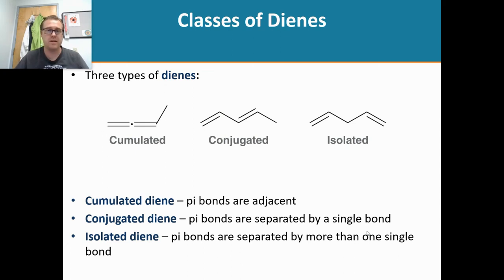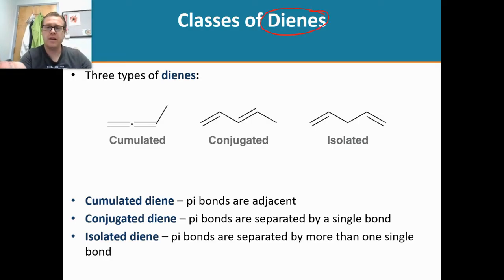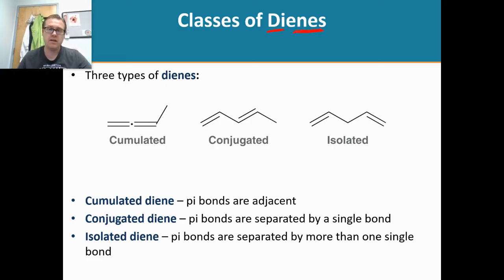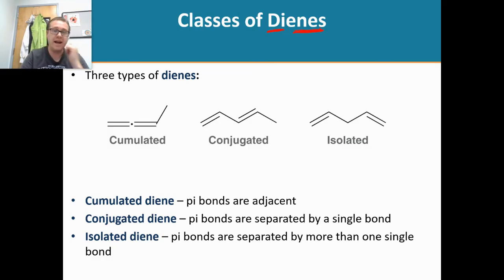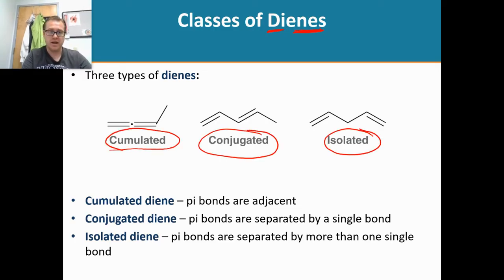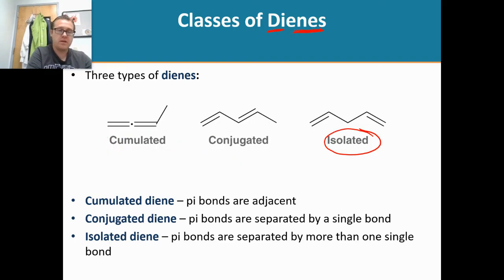In this video we are going to discuss dienes. Dienes are important because we're going to see a class of reactions with dienes. When we analyze the word 'diene,' we see the prefix 'di' which means two, and 'enes' meaning an alkene. So we're going to be looking at molecules that have two alkenes. Having two alkenes makes a diene, but there are different types: accumulated, conjugated, and isolated.